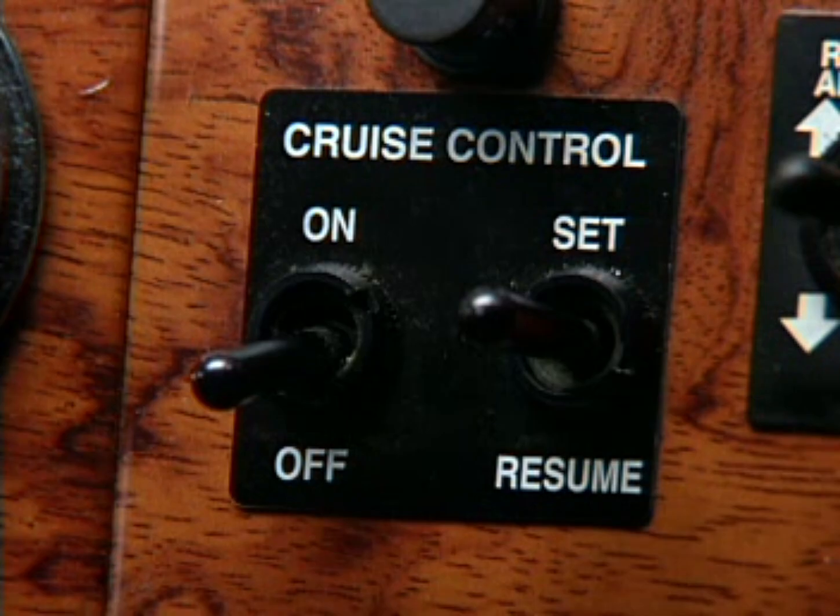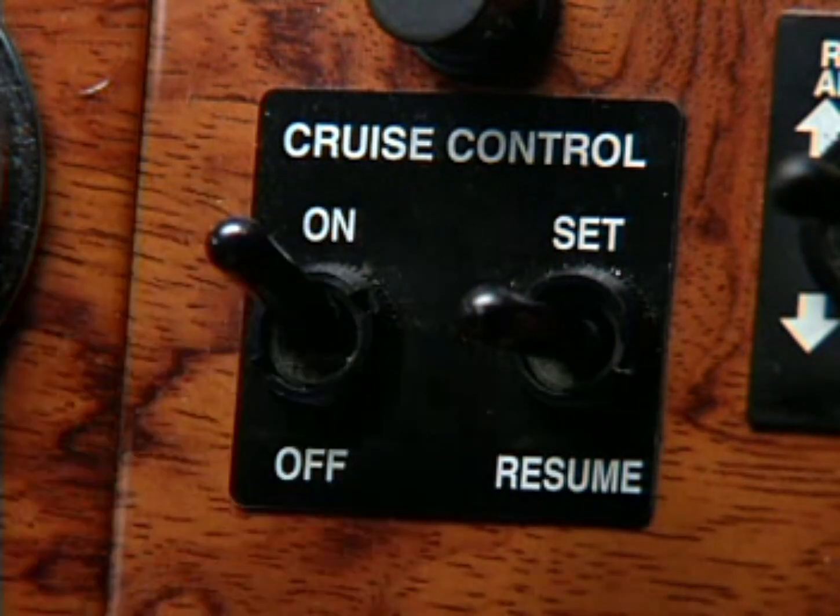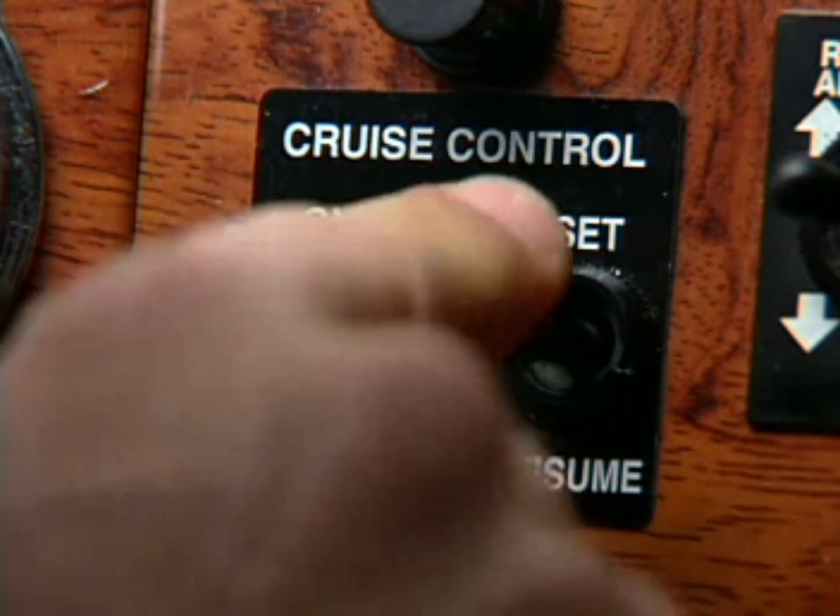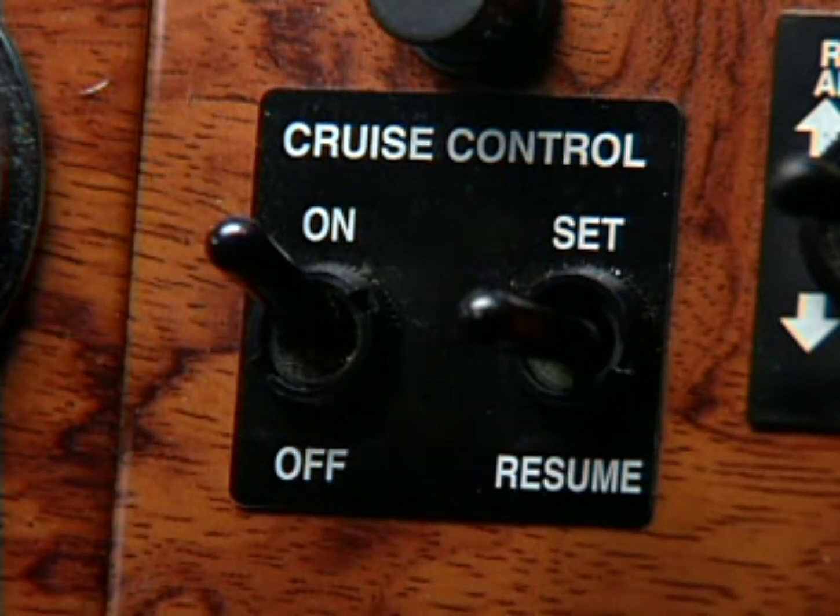The switch position can be either latched or momentary. A latched switch maintains the switch position when the switch is toggled, such as a cruise control on-off switch. A momentary switch only maintains contact as long as the switch is held in position, such as a cruise control set switch.